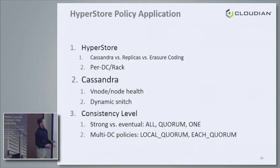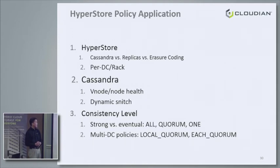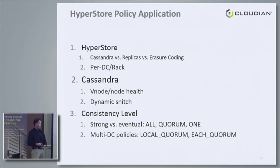To review where we apply policy: at the HyperStore layer, we decide storage type — Cassandra, replicas, or erasure coding — and data protection per DC and per rack. At the Cassandra layer, we determine which nodes are alive and their latency, then pass back preferred storage targets. As responses come back, we apply consistency level decisions: strong vs. eventual consistency and multi-data-center consistency. We might use strong consistency locally but write asynchronously to remote data centers.